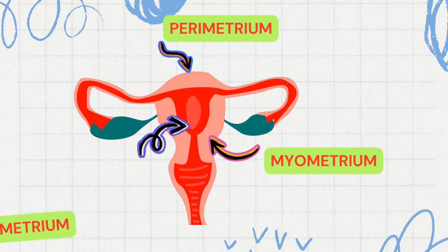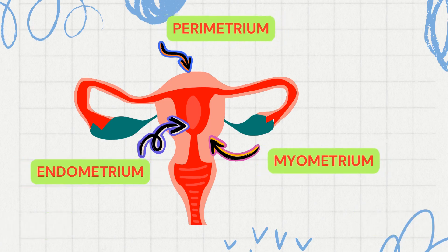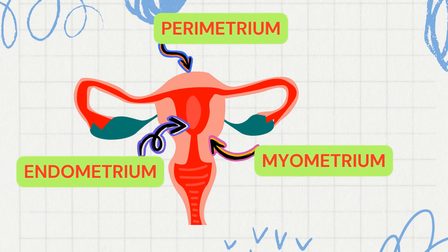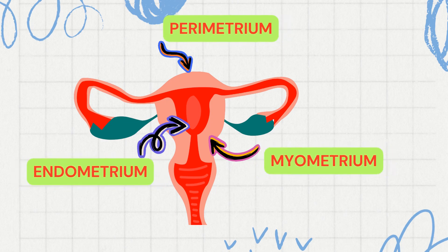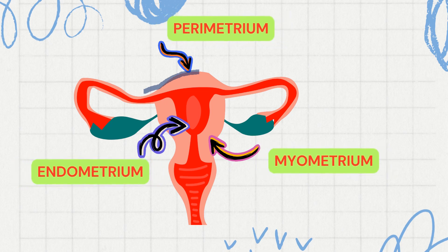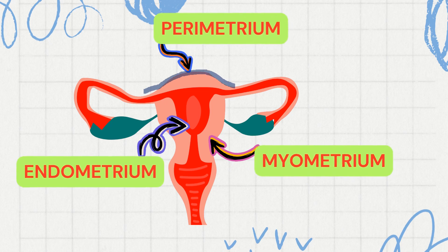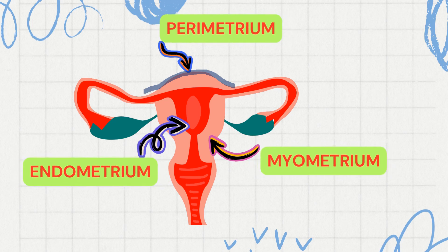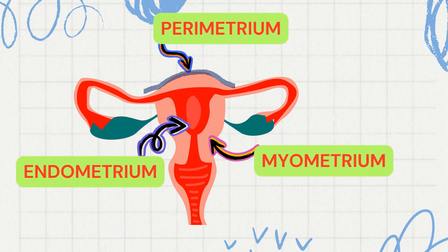Before delving deep into the topic, let us study about the wall of the uterus. The wall of the uterus is composed of three layers. The outermost thin membranous layer is the perimetrium, also known as the serosa. The thick layer of smooth muscles in between is the myometrium.